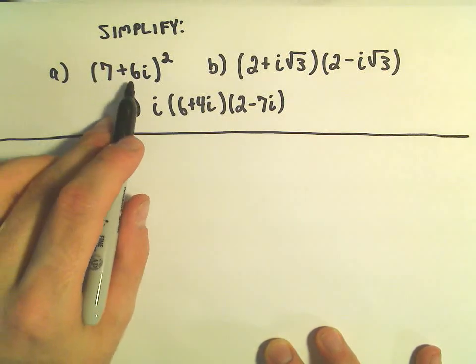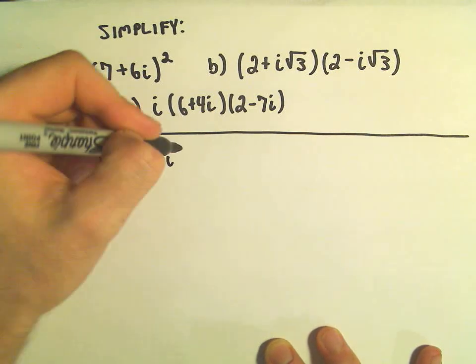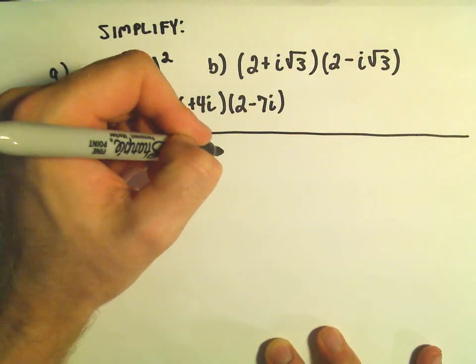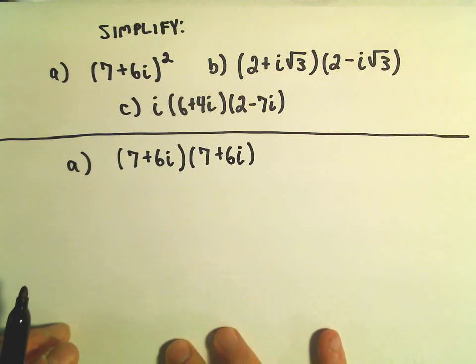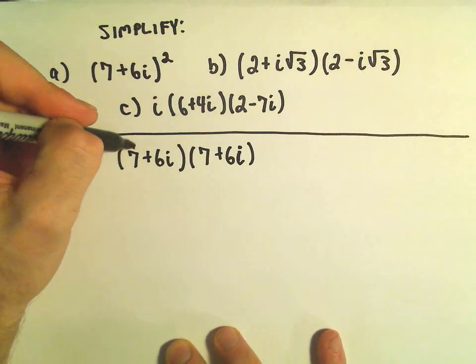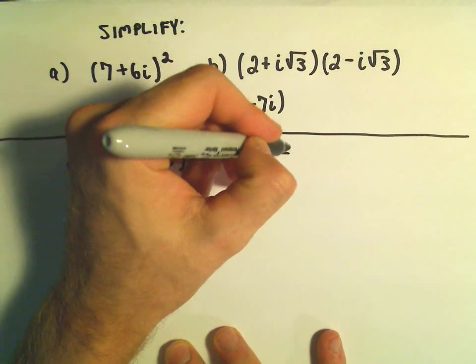In part a we have 7 plus 6i squared. And I'm going to write this out as 7 plus 6i times 7 plus 6i. So the first thing I'm going to do is just distribute it out. So 7 times 7, that's going to give me a positive 49.